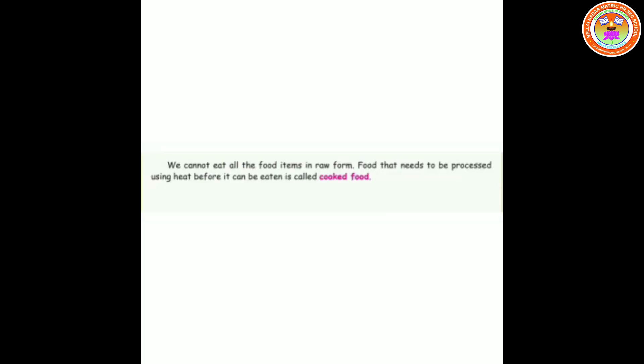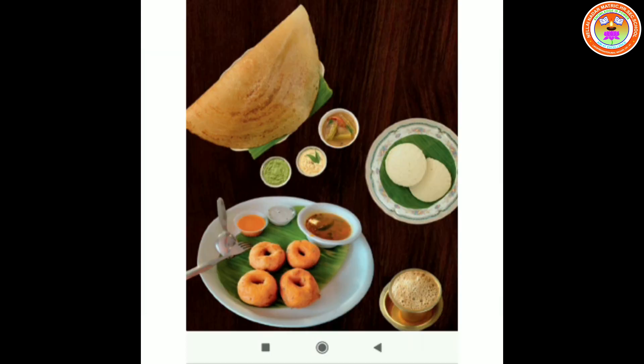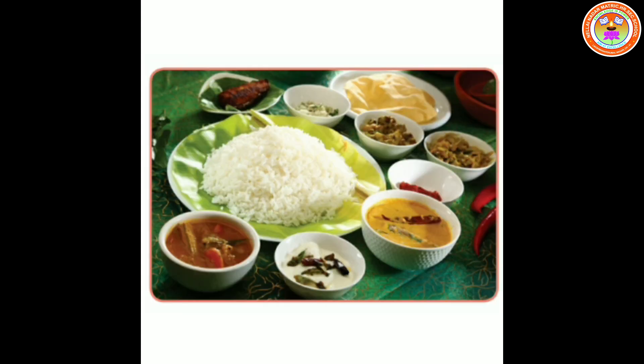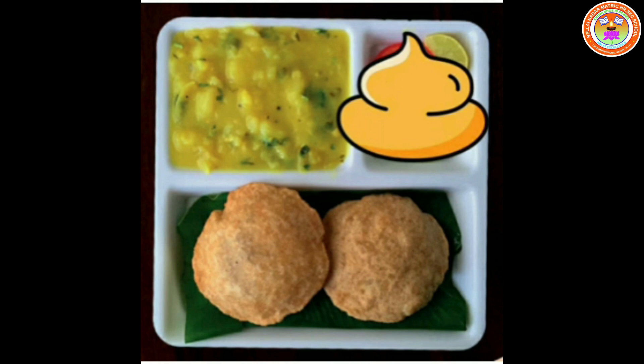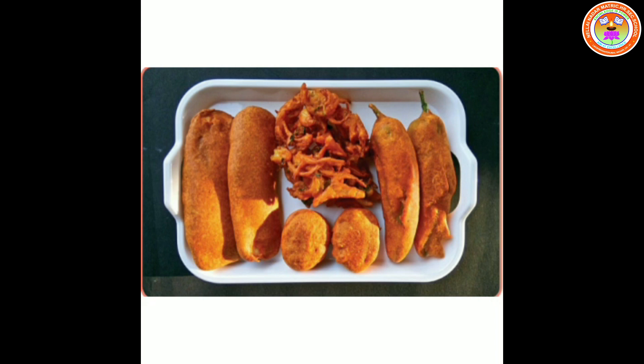Now let's see the second one: cooked food. We cannot eat all food items in raw form. Food that needs to be processed using heat before it can be eaten is called cooked food. Let's see some examples: vegetable gravy, dosa, idli, vada, rice, puri, iddiyappam, and pudding.